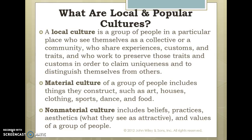One other thing we want to cover is the 'what' of culture. We've talked about who forms a culture and the 'how' — the verb piece. Now we talk about the 'what.' We split this into two distinct categories: material culture and non-material culture. Material culture is things that people construct — things like art, houses, clothing, sports, dance, food. I like to think of material culture as things you can lay your hands on, things you can actually touch, see, smell, or taste.